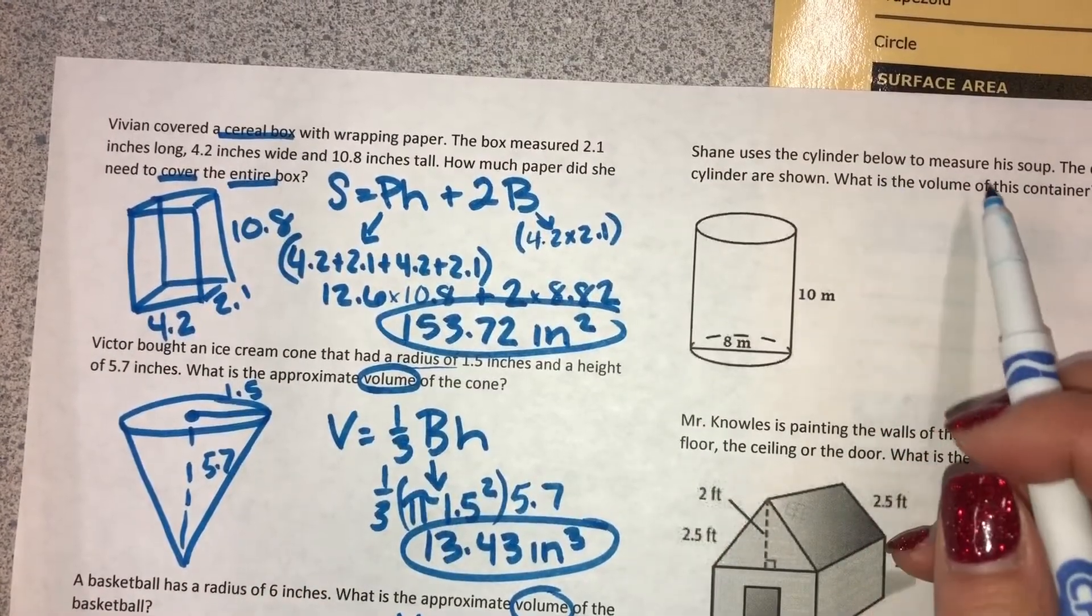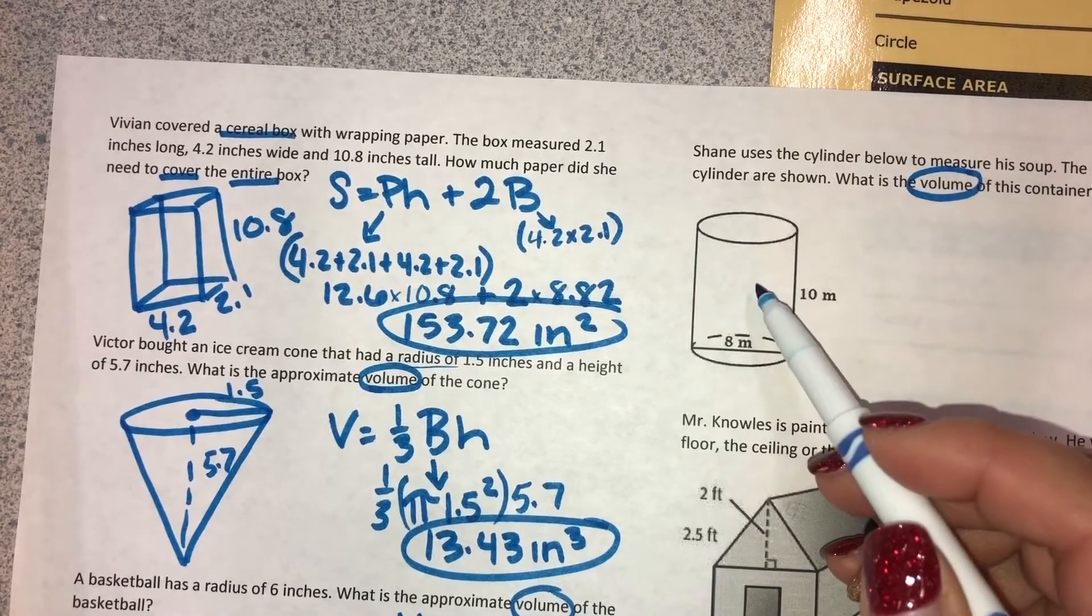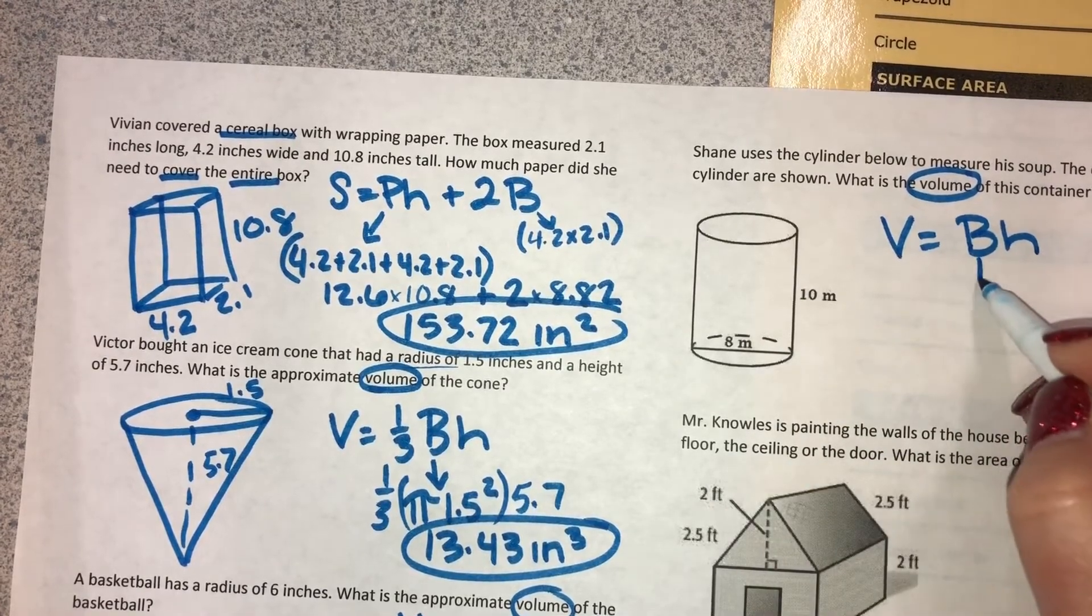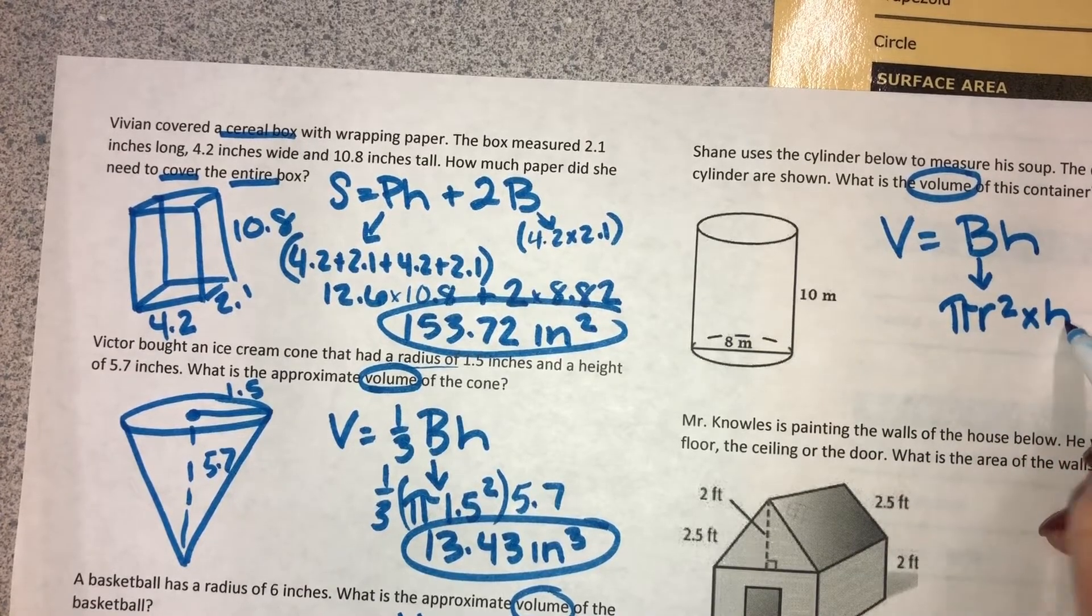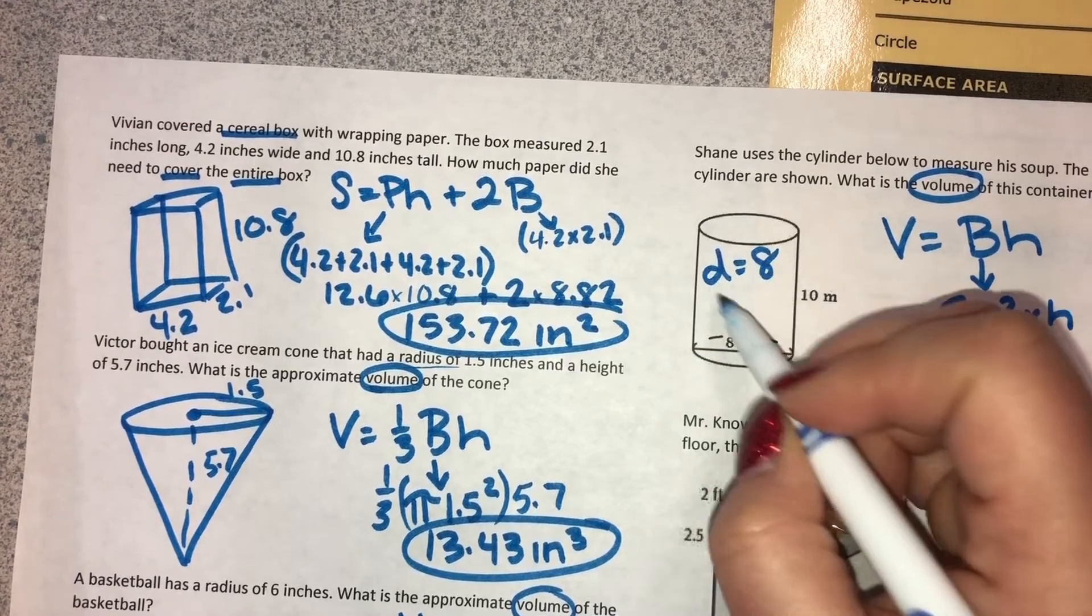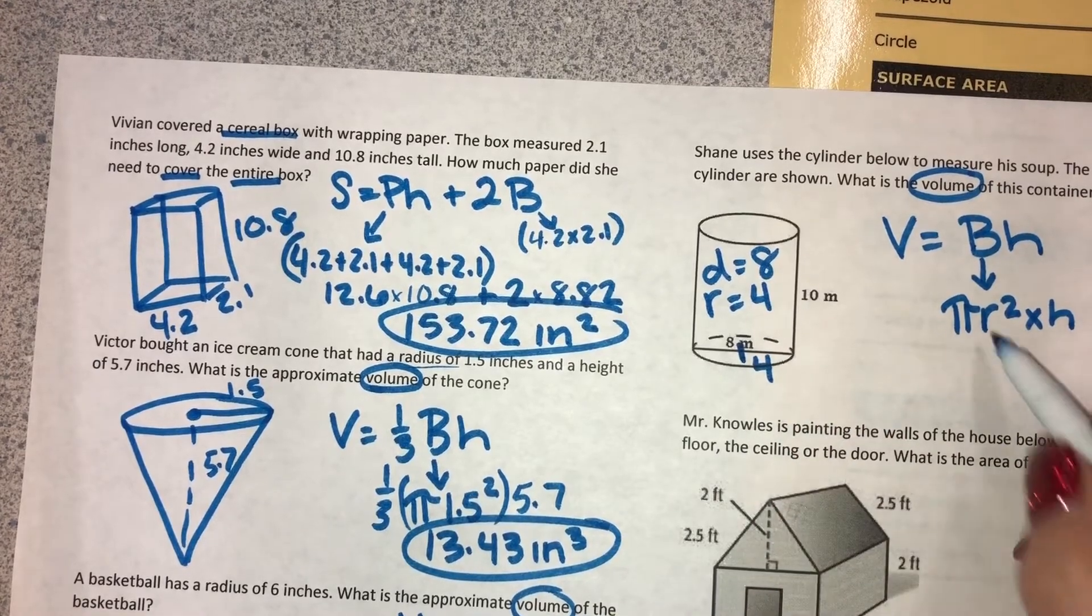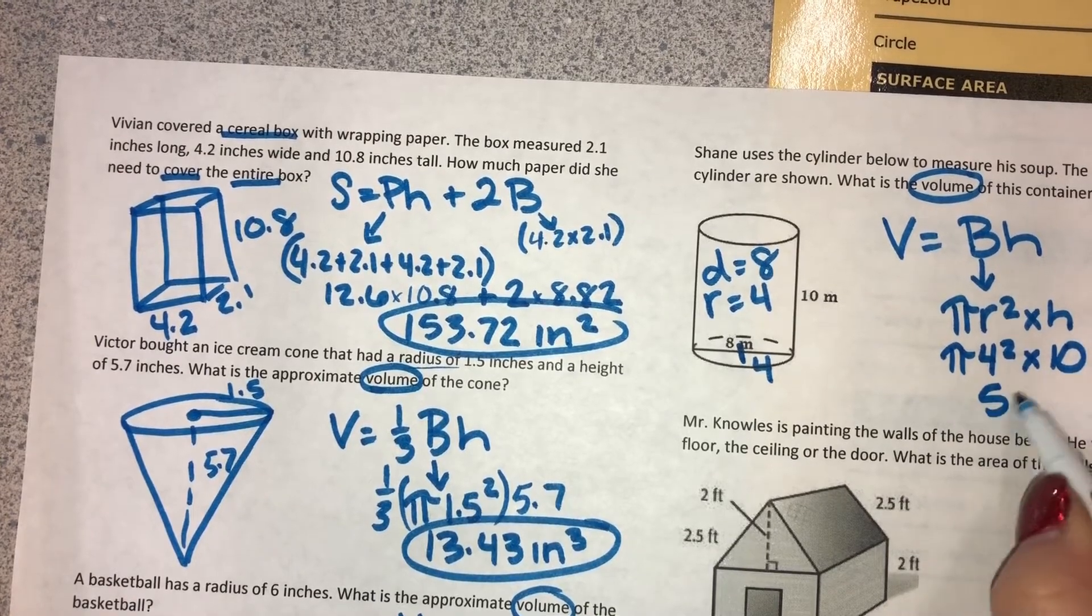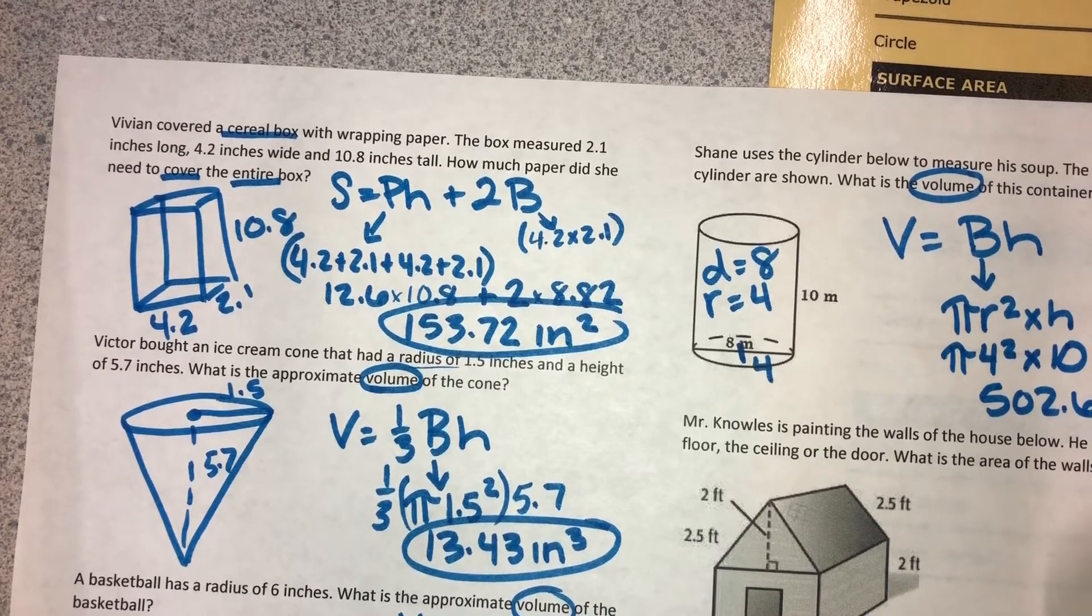Shane uses a cylinder below to measure his soup. The dimensions of the cylinder are shown. What is the volume? So volume of a cylinder: V equals BH. Since the base is a circle and we have to calculate that, it's pi R squared times the height. Now if you look at this picture, this goes all the way across. So that means the diameter is 8, but the radius is 4 because it's half. So pi 4 squared times 10 would give you 502.65 meters cubed because it's volume.